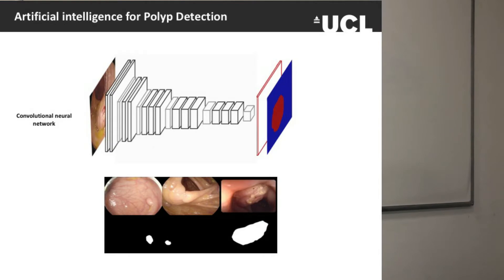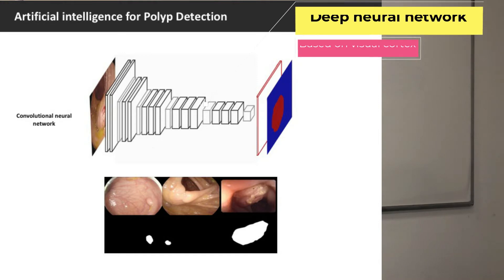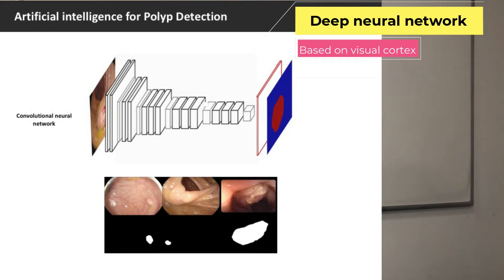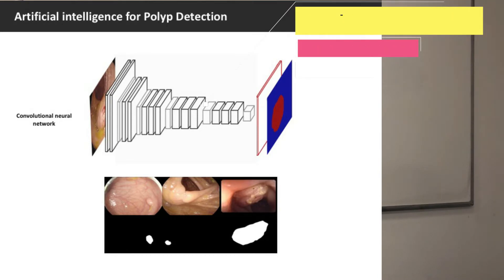So why is deep learning an advance? Well, deep learning is characterised by a type of neural network known as a deep neural network, which is loosely inspired by human biology and based on the visual cortex. The real benefit of deep learning over more classical or conventional types of machine learning is that these algorithms are able to learn themselves which features in endoscopic images are most important for a specific problem, such as polyp detection or polyp characterisation. In the past, we required human endoscopists to define these features, which of course had a lot of limitations.